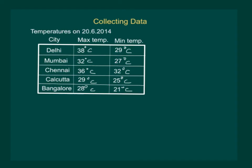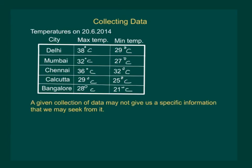Let us now try to understand the importance of collecting data. The data on the screen can tell us many things, but it cannot tell us the city which had the highest maximum temperature during the year. To find that, we need to collect data regarding the highest maximum temperatures reached in each of these cities during the whole year. In that case, the temperature chart of one particular date of the year as given in this table will not be sufficient. That means, a given collection of data may not give us a specific information that we may seek from it. So, we need to collect data keeping in mind the information required from it.